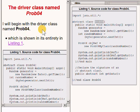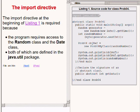I will begin my explanation with the driver class which is named prob04. This driver class is shown in its entirety on the right of your screen. The import directive that is highlighted on the right of your screen is required because the program requires access to the Random class and the Date class. Both of those classes are defined in the package named java.util.